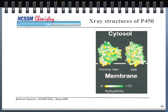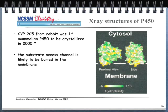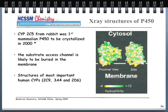We know the structures of cytochrome P450 enzymes pretty well. This protein was first crystallized in the year 2000 from rabbit studies. We'll spend time on protein structures when we get to pharmacogenetics. The most important CYP structures for humans are CYP2C9, CYP3A4, and CYP2D6.